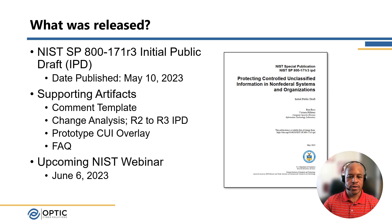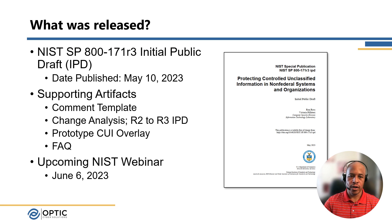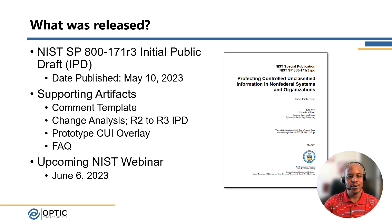Protecting Controlled Unclassified Information in Non-Federal Systems and Organizations, or 800-171 Revision 3 Initial Public Draft, was released this week, May 10, 2023. In addition to the release of this document, there were also some companion artifacts released as well.